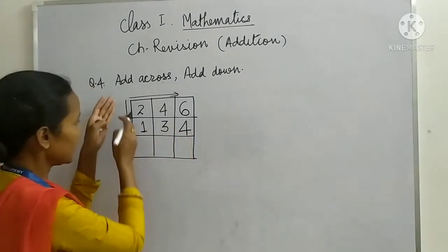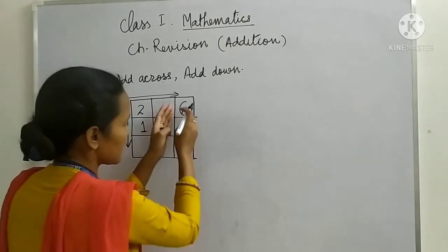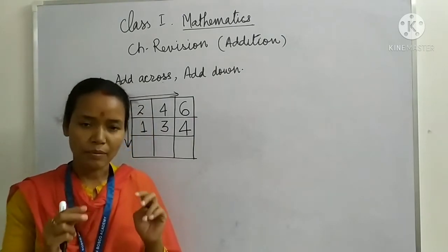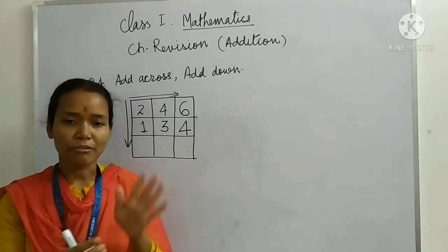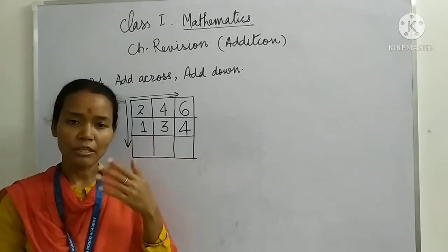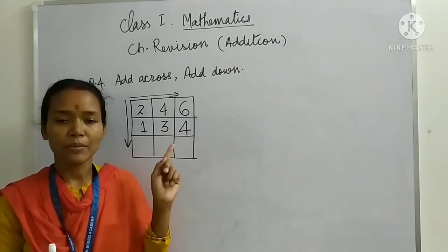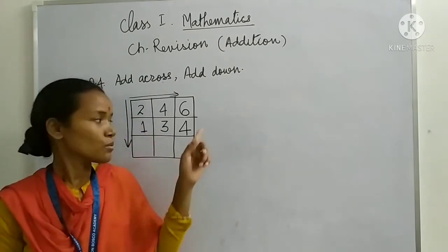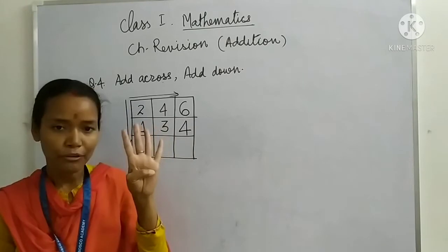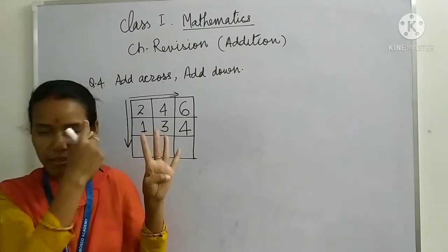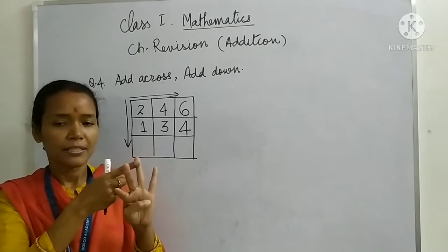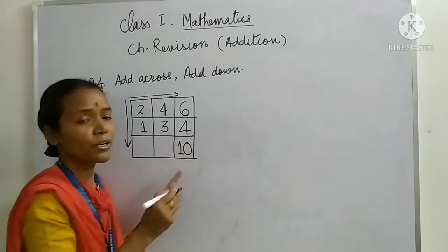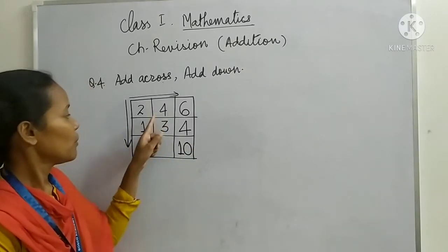Now we have to add down. Let's start with 6 and 4. 6 plus 4. Whenever you get numbers more than 5, you have 5 fingers children. So when you will get more than 5, you keep that bigger number in mind and smaller number you can count in fingers. So 6 we will keep in mind and 4 we will count in fingers. So 6, 7, 8, 9, 10. What I got? 6 plus 4, 10.